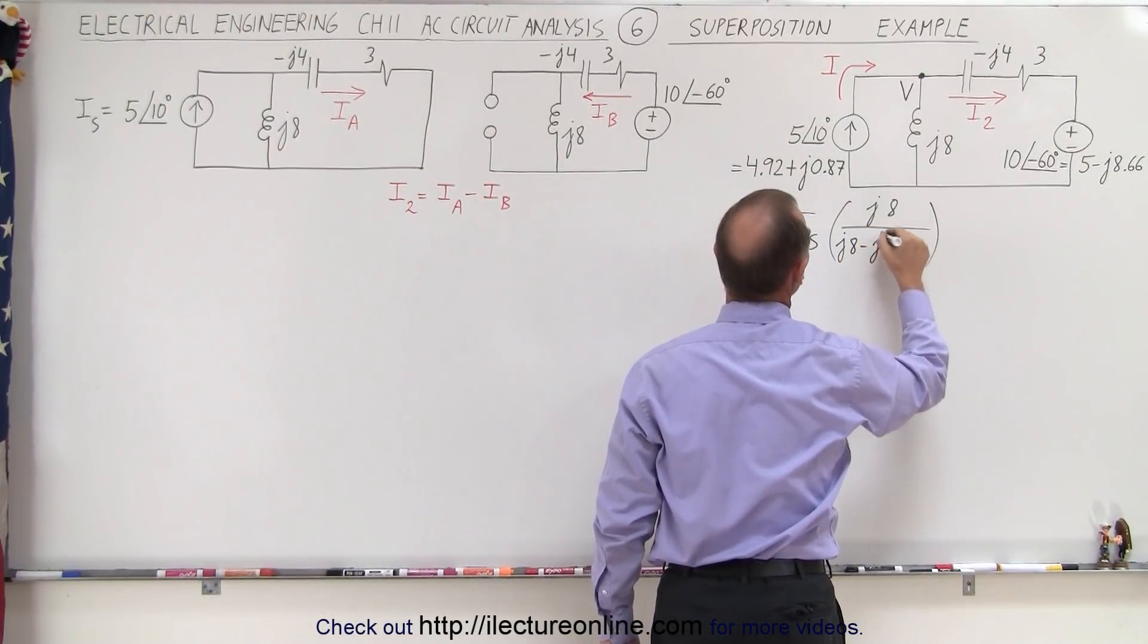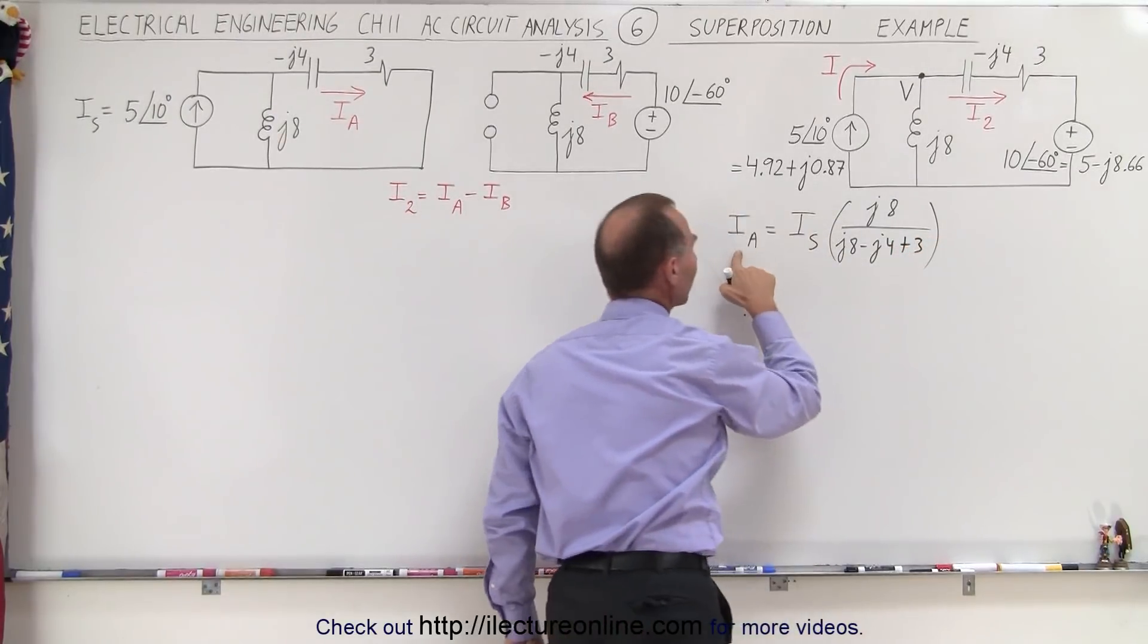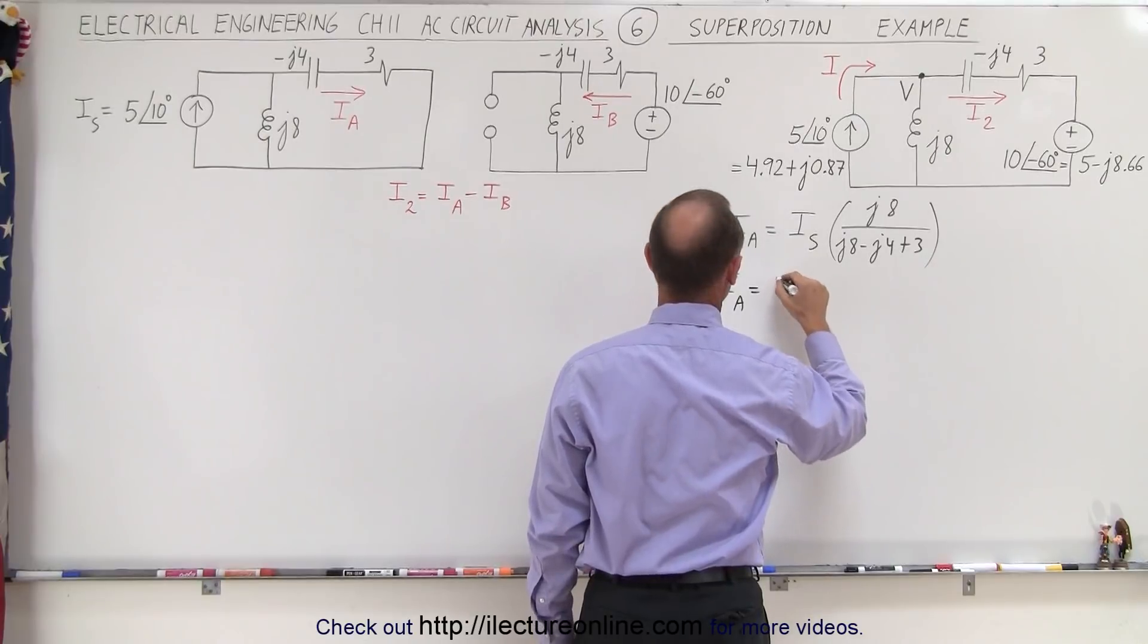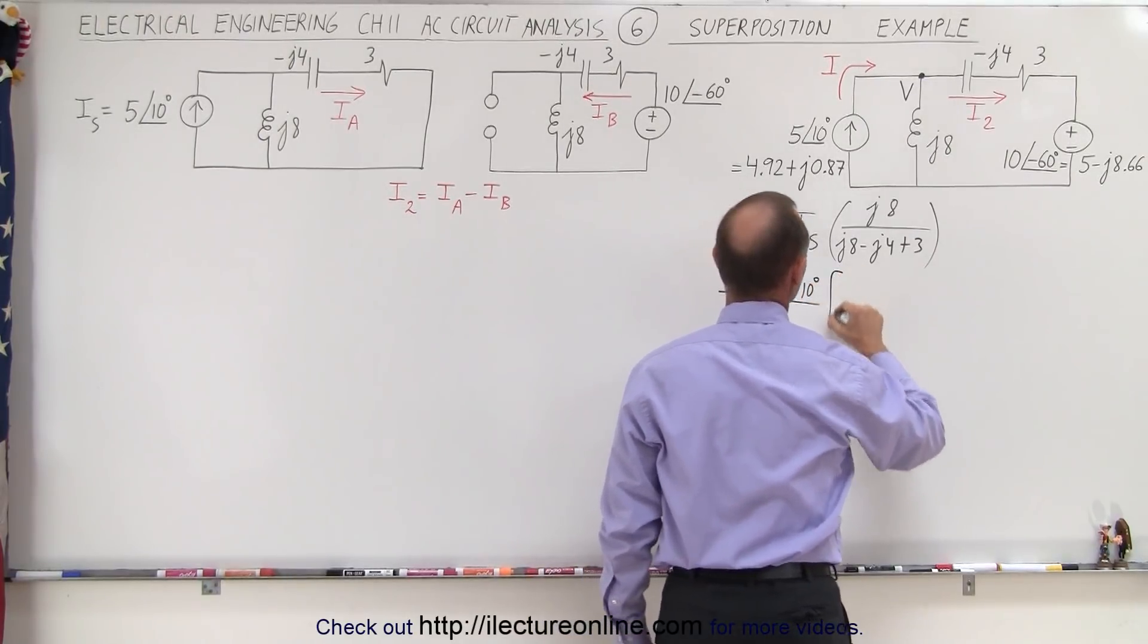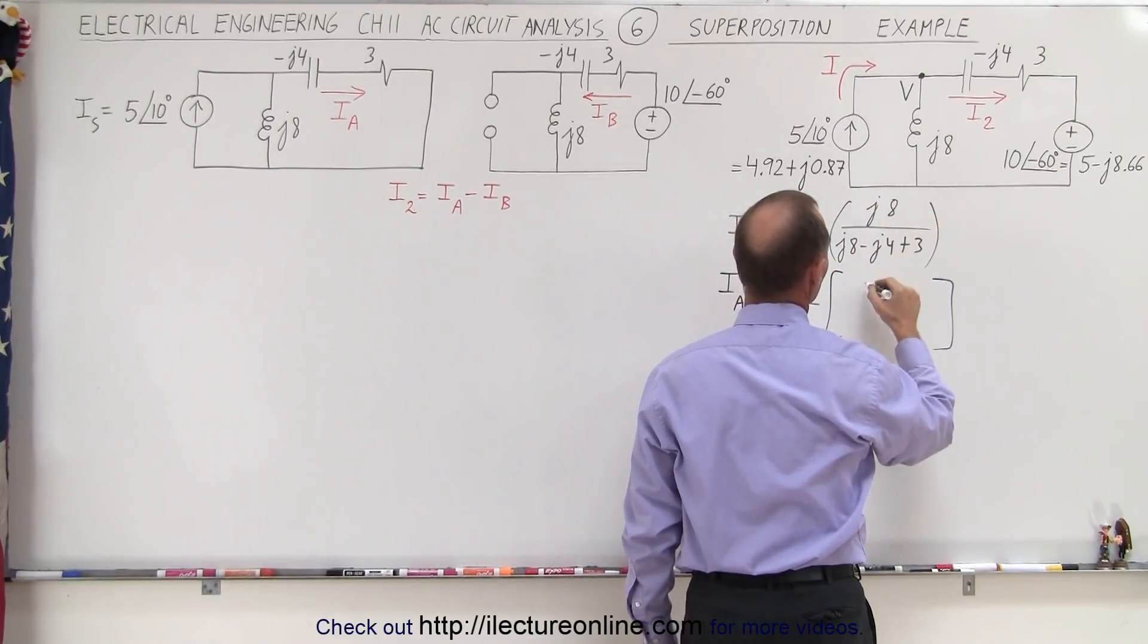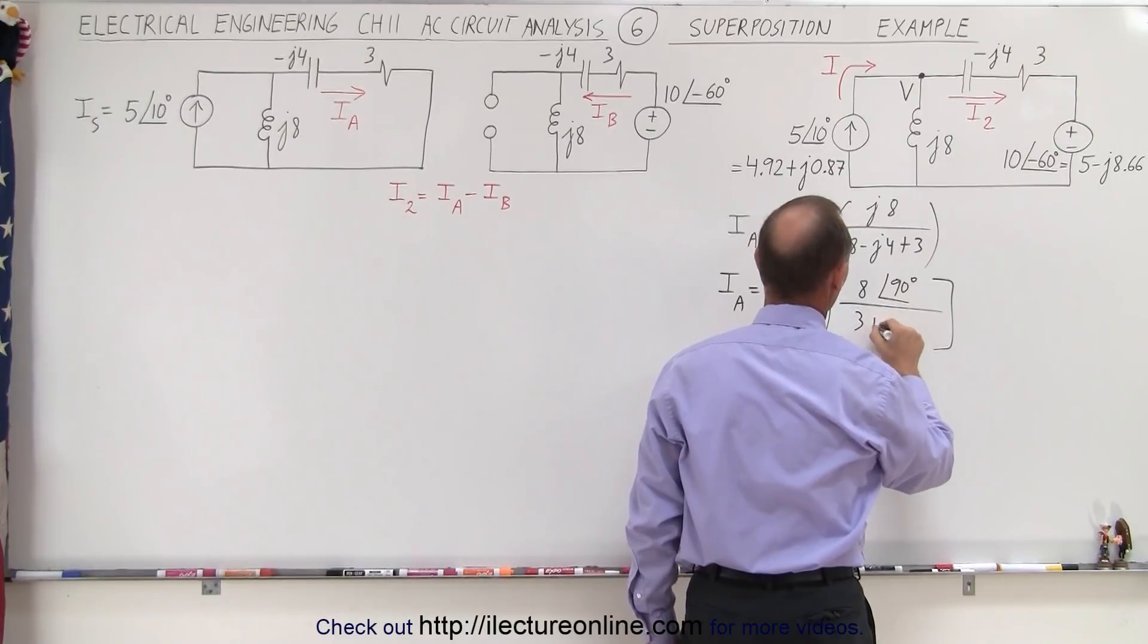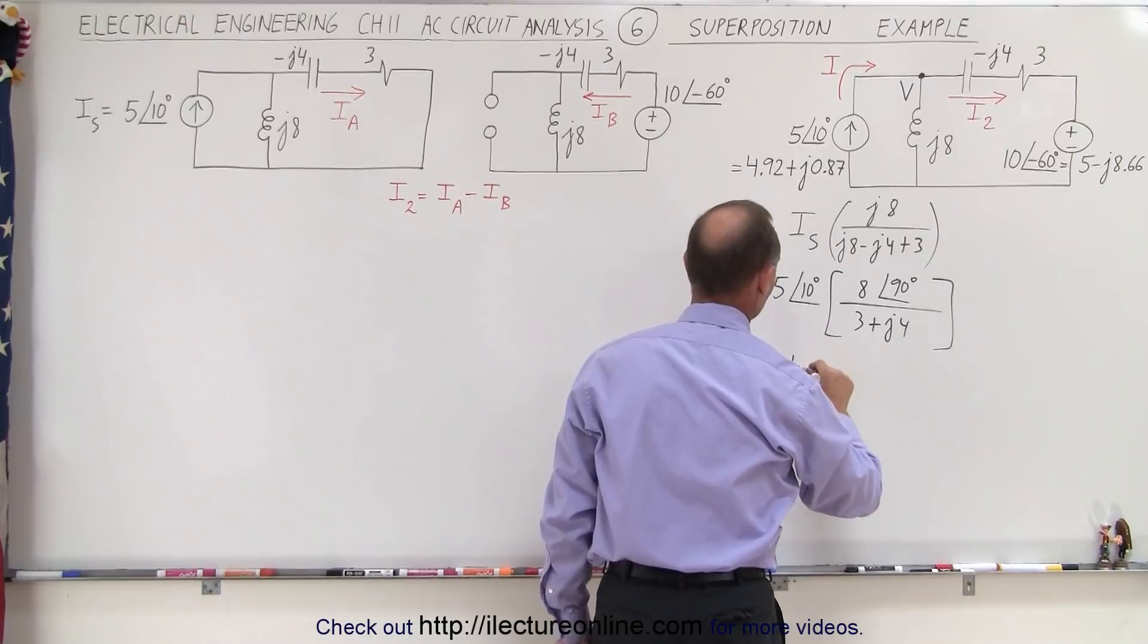So in this case that would be J8 minus J4 plus 3, so that will give us I sub a. I sub a is equal to the source current which is 5 amps with a phase angle of 10 degrees times, in the numerator we're going to convert that to magnitude and phase angle so it would be 8 with a phase angle of 90 degrees, in the denominator we end up with 3 plus J4 which is equal to 5 with a phase angle of 10 degrees.